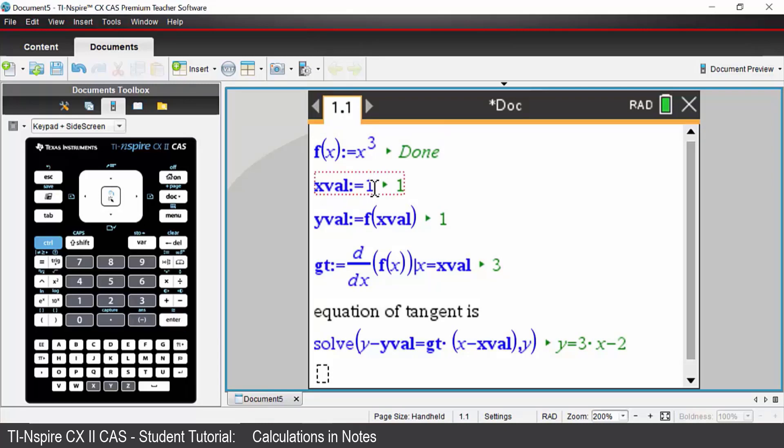If I wanted to change my x value, I can just come up and change that to say negative 2 and again everything will update.